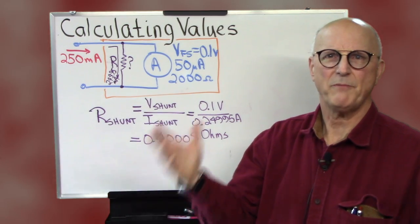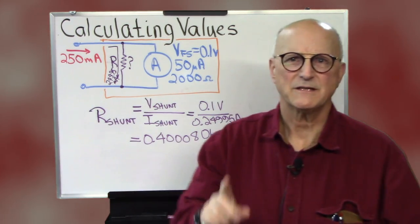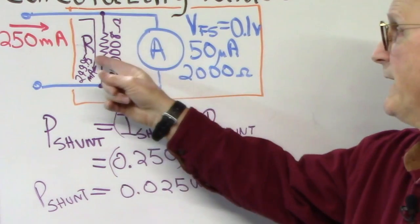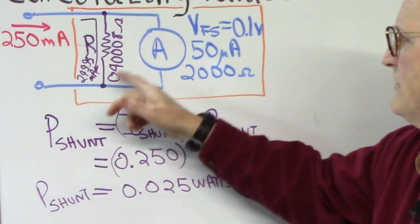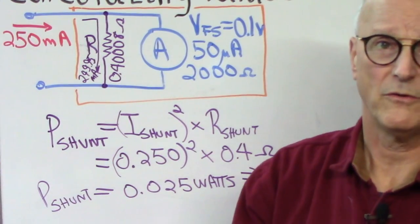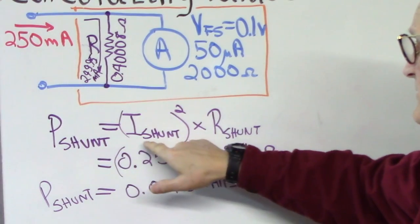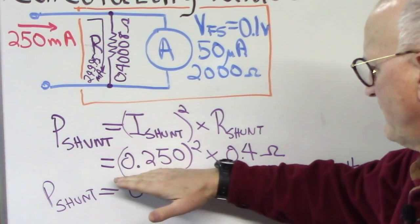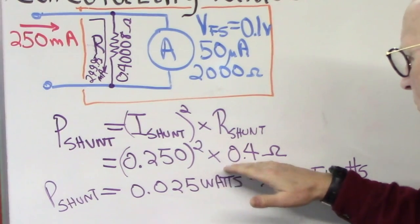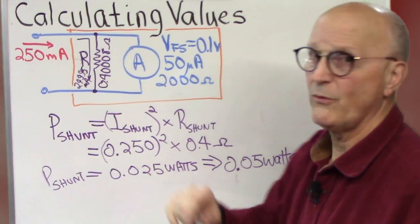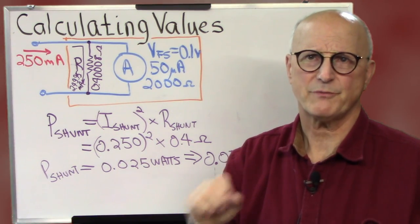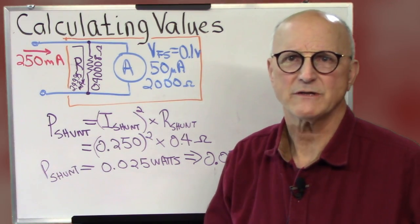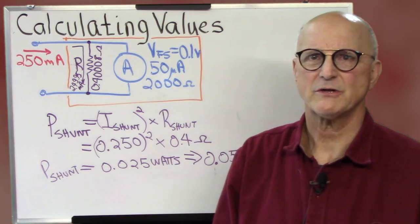But you know we absolutely positively have to ask the question what does the power dissipation of the shunt resistor need to be? We have essentially 250 milliamps running through this resistor. And rounding this off to the closest value we have 0.4 ohms. So the power dissipation in this shunt resistor is equal to the current through the shunt resistor squared times the value of the shunt resistor. So we have 250 milliamps squared times 0.4 which gives us 0.025 watts. Now we're not going to use a resistor that size. We want to properly derate it. And so properly derated we need at least a 50 milliwatt or 0.05 watt resistor to accomplish our goal here.